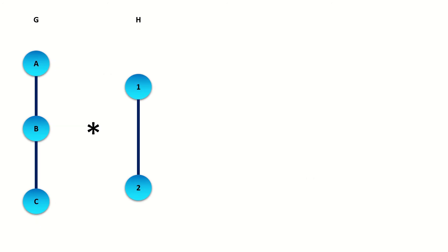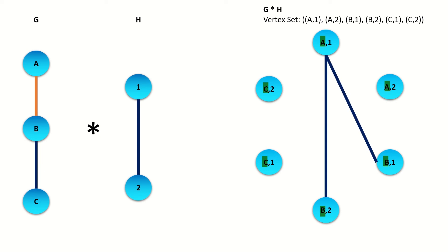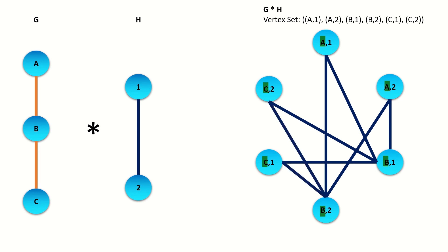Let's do two more examples. What is the conormal product of these two graphs G and H? Feel free to pause the video and work it out yourself first. The vertex set of the product is the Cartesian product of the vertex sets of G and H. Now let me show you a quicker way to go through the adjacency calculations. Just look at the left entries of the vertices — ignore the right entries for now. For each edge in the left graph, find all pairs of conormal product vertices whose left entries are the endpoints of that edge, and connect them. So if vertex A is adjacent to vertex B in graph G, connect each conormal product vertex starting with letter A to all of those starting with letter B. Repeat for all remaining edges in G — in this case, that just leaves BC.